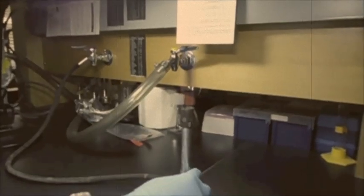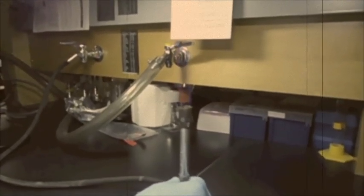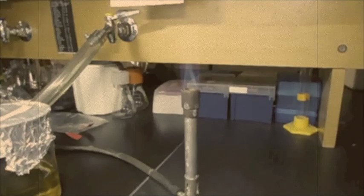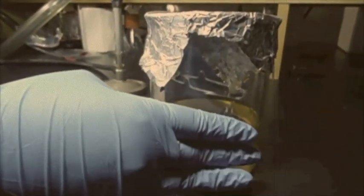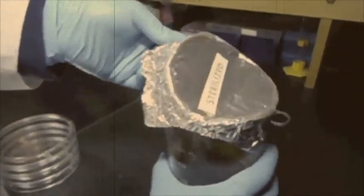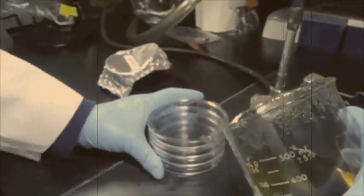Light your Bunsen burner in preparation for pouring plates. Remove sterile plates from your sleeve with lids attached. With the other hand, lift lid and quickly pour cooled agar solution into each plate.